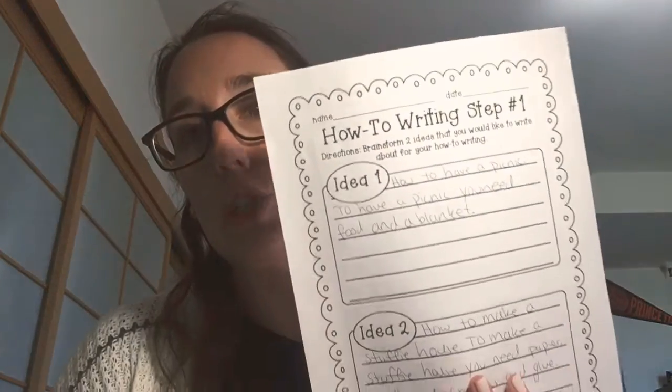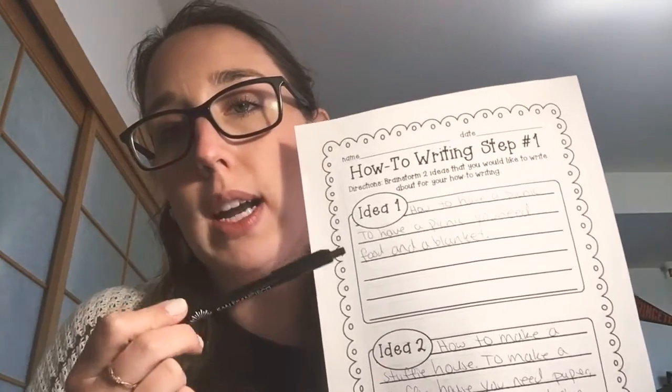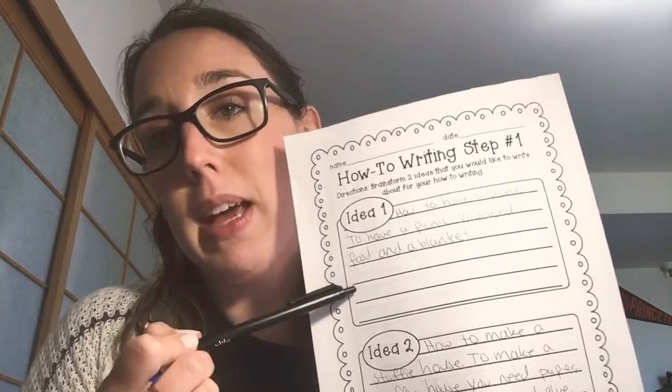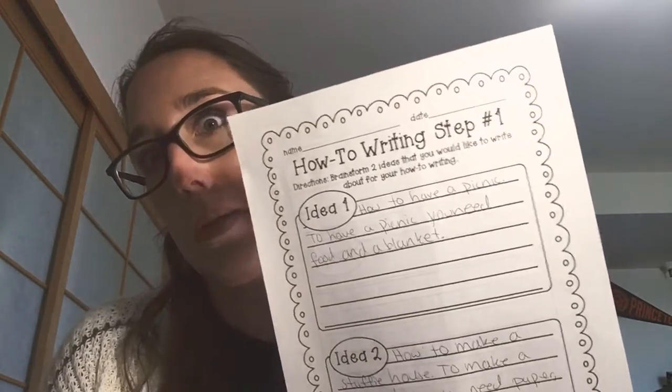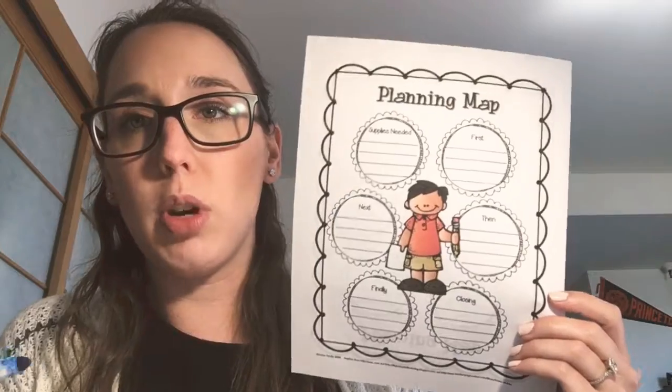Hi Sprouts! For writing today we're going to continue to work on our how-to book for something to do over the summer. I went ahead and pulled out my how-to writing page from yesterday with my two ideas, and I'm going to choose to write about having a picnic because that's what I want to write about. So I'm going to circle idea one so that I remember that's what I'm going to work on. Now I'm going to use my planning map to help me plan out my how-to book.